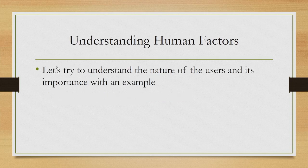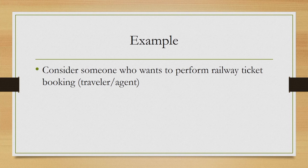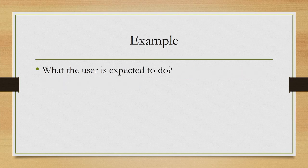Let us try to understand the need for such a differentiation with respect to an example. Suppose we are trying to perform a railway ticket booking task. Here, we may refer to a traveller or an agent, but the task is the same — booking a railway ticket. The first thing we should be focusing on is the expectations of the user.